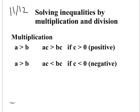That's because you're multiplying by a negative number. So if you multiply by a negative number, you have to switch signs. See how they're different?